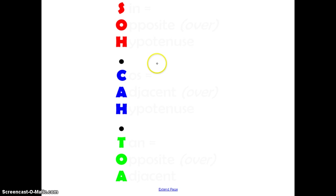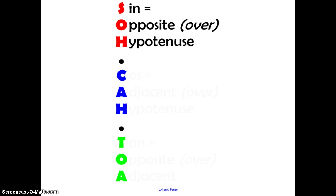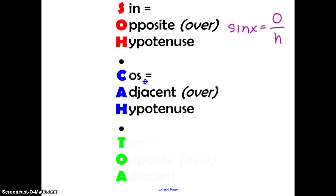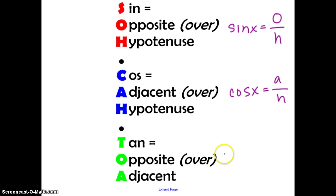We're going to use the acronym SOHCAHTOA to help us remember all of our trig functions. SOH stands for sine equals opposite over hypotenuse — so the sine of an angle X equals the opposite side over the hypotenuse. CAH stands for cosine equals adjacent over hypotenuse — the cosine of the angle equals the adjacent side over the hypotenuse. TOA stands for tangent equals opposite over adjacent. Remember SOHCAHTOA: sine, cosine, tangent — where O, H, and A stand for opposite, hypotenuse, and adjacent.